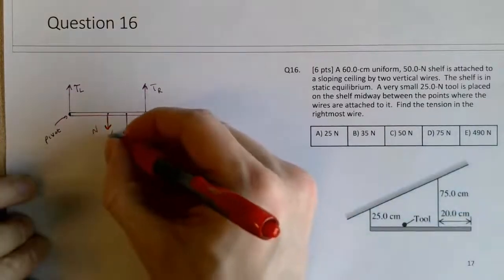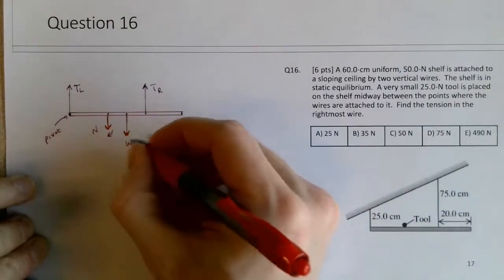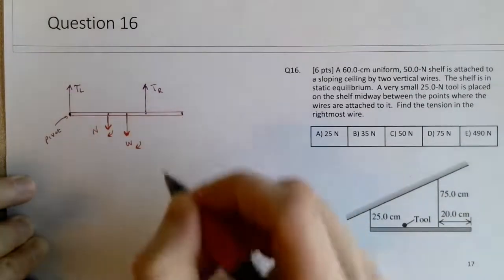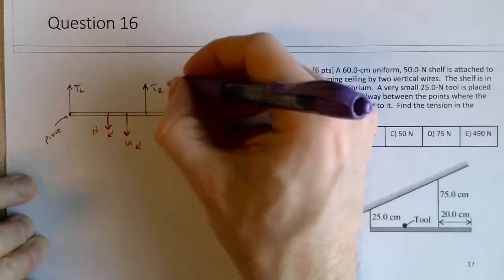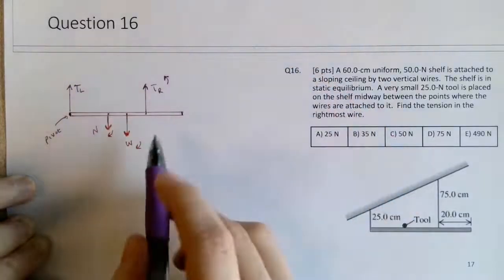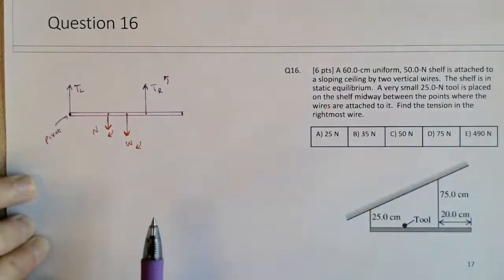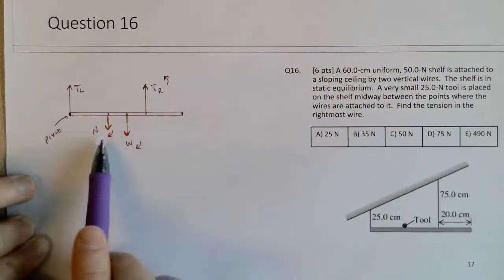So about this pivot point, there are two clockwise torques from the weight force and the normal force by the tool. And then the tension in the rightmost wire, the counterclockwise torque inserted by that force would need to balance these two clockwise torques.